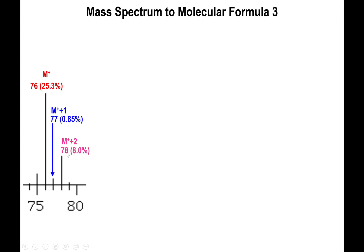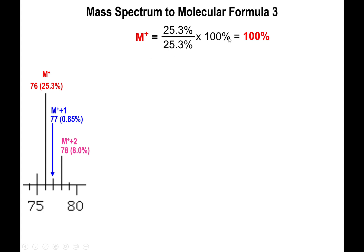The fact that the M+2 peak is present means we are dealing with either chlorine, bromine, or sulfur. The first thing we need to do is rescale the M+ peak back to 100%. Since it's at 25.3%, we divide 25.3 by itself and multiply by 100. We apply the same operation to M+1 and M+2: divide 0.85% and 8.0% by 25.3 and multiply by 100.